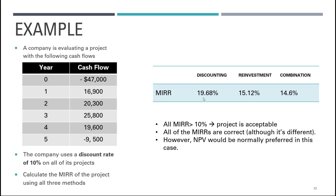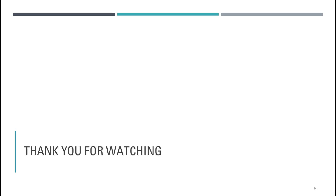We have gone through and computed MIRR using three different approaches: discounting, reinvestment, and combination. All three MIRR values are greater than 10%, which is the discount rate — in other words, the project is acceptable. Although the results differ by approach, all are considered correct. MIRR is a better alternative over IRR in handling non-conventional cash flows. However, although it is an improved version of IRR, it still has a potential problem of ranking mutually exclusive projects, so it would be preferred to use NPV in those cases. Thank you very much for watching, and I hope you have a better insight on how to calculate MIRR from this video.